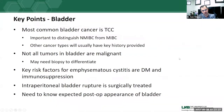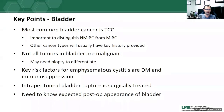Key points from the bladder portion: the most common bladder cancer is transitional cell carcinoma. It is important to distinguish non-muscle invasive from muscle invasive disease. Other cancer types, especially on tests, will usually come with a key clinical history. Not all tumors in the bladder are malignant — biopsy or resection may be needed. Key risk factors for emphysematous cystitis are diabetes and immunosuppression. Intraperitoneal bladder rupture is surgically treated while extraperitoneal rupture is conservatively treated. Be familiar with expected postoperative appearances, as each patient's surgical history is different.